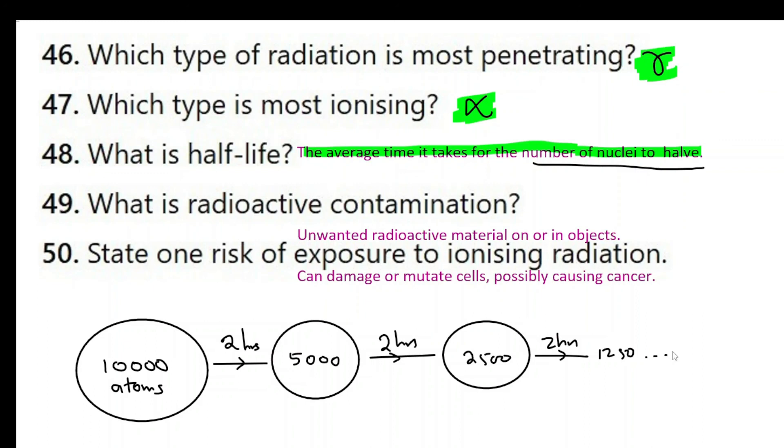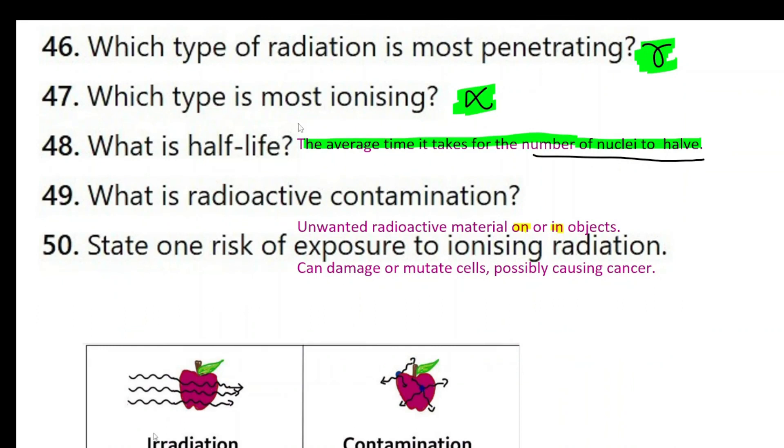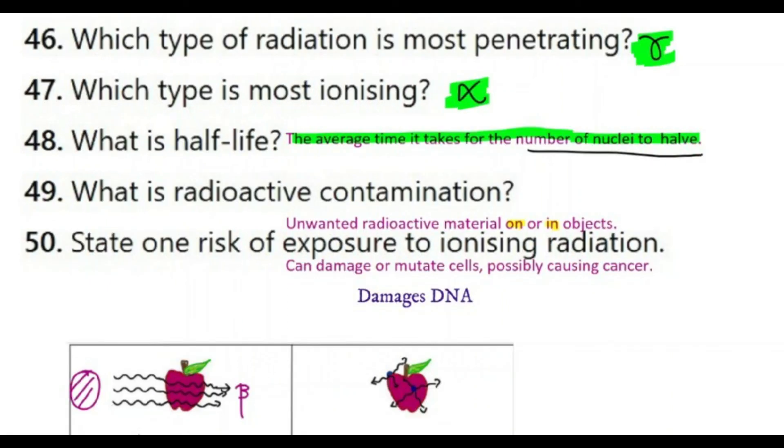What is radioactive contamination? Unwanted radioactive material on or in. Now these are really important words, on it or in it. So this is linked to the theory which explains the difference between irradiation and contamination. In irradiation we have the radioactive source outside. Only the radiation goes to the material. In contamination it is actually on or in it. So here you can see that in irradiation the radioactive source is outside, and the radiation, say beta in this example, go through the sample. Now that is irradiation. Contamination is when radioactive substances are on it or in it. Last question. State one risk of exposure to ionizing radiation. It can damage or mutate cells, possibly causing cancer.